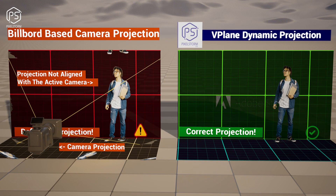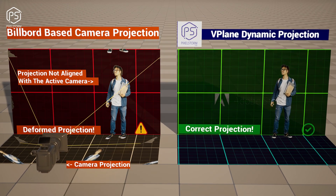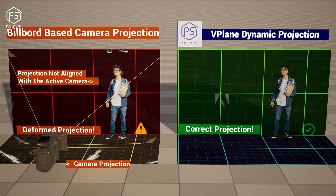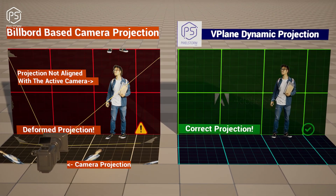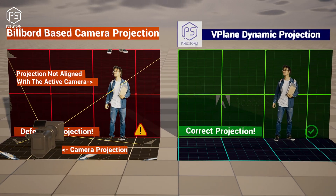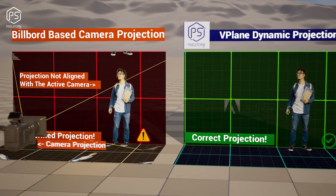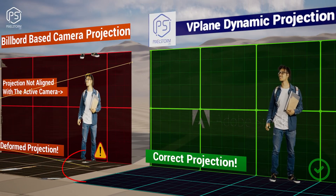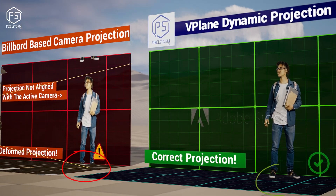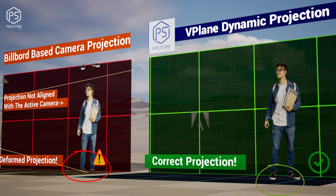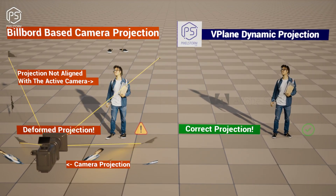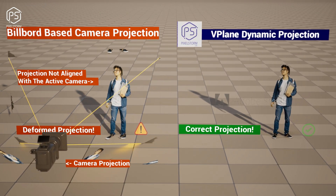As you can see here on the left, I have the billboard in red color. This shows the incorrect method for projecting using a static camera. Here on the right, we can see a dynamic v-plane projection. Let me explain what is the purpose of projection.